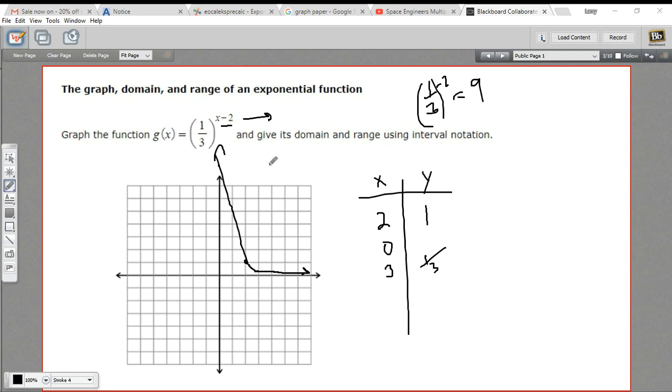So there is a sketch of the graph. Now, let's think about the domain and the range. Remember, the domain is all x values. And we can put in anything for x. All of these negative values have values in the function, no problem.